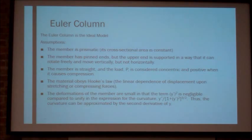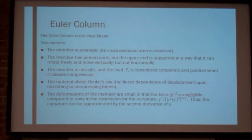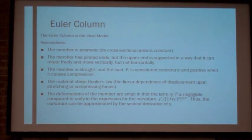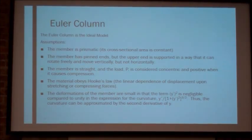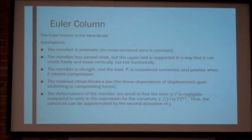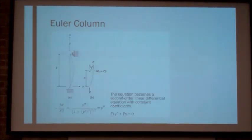First, I'm going to introduce the Euler column, which is the ideal model. The assumptions are that the member is prismatic, pinned at both ends, however the top end can translate vertically, the member is initially straight with load P considered to be concentric and positive when it causes compression, the material obeys Hooke's law, and the deformations are small so that the derivative of y squared is negligible compared to unity in the expression of curvature. Thus, the curvature can be approximated by the second derivative of y.